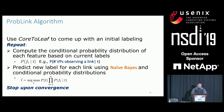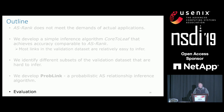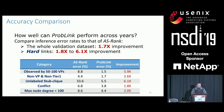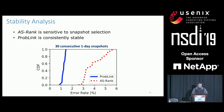How well does PropLink perform? Compared to ASRank, PropLink reduces the error rate for all links in the validation dataset over the past six years by 1.7 times on average. It reduces the error rate ranging from 1.8 to 6.1 times for various categories of hard links. ASRank accuracy is quite unstable and sensitive to snapshot selection — when applied to 30 consecutive one-day snapshots, it yields a wide error rate range. PropLink is consistently stable.